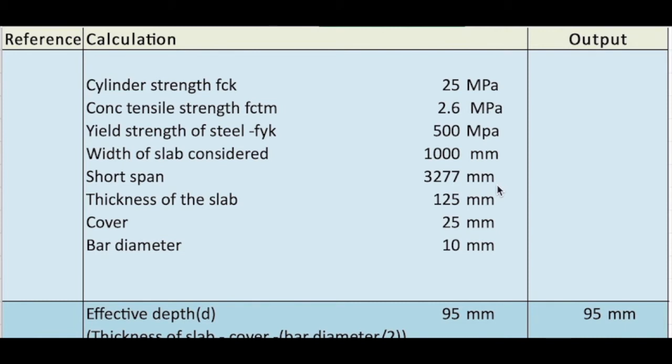In this particular case, I chose a residential house and then I did the SAP 2000 analysis. In the analysis, I found out the critical condition slab and then as it's a two-way slab, I chose the shortest span that is 3277 mm.